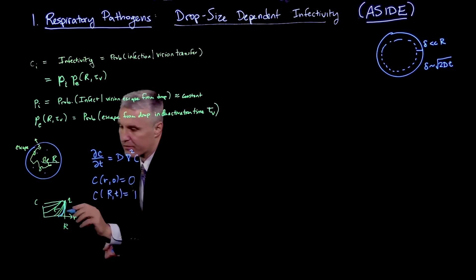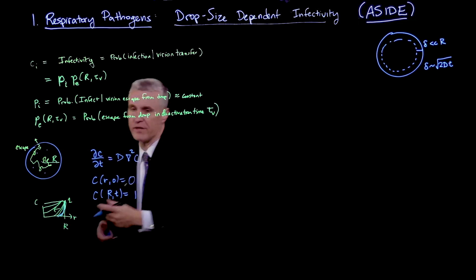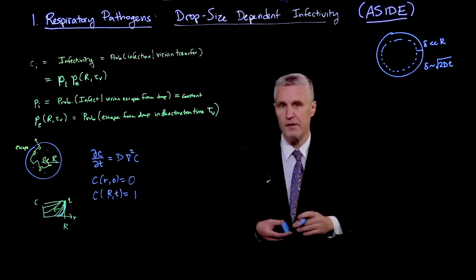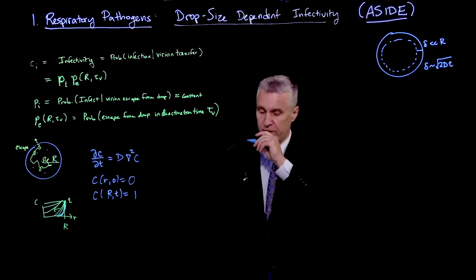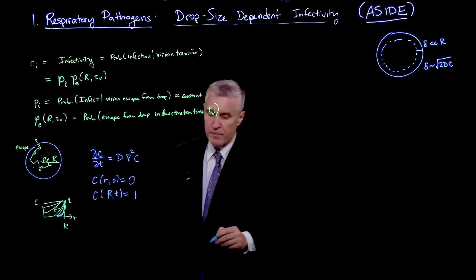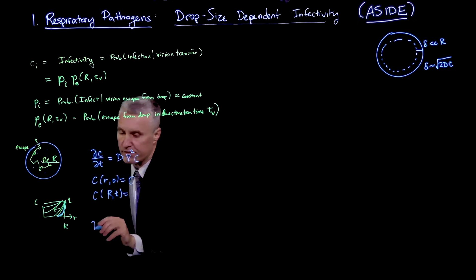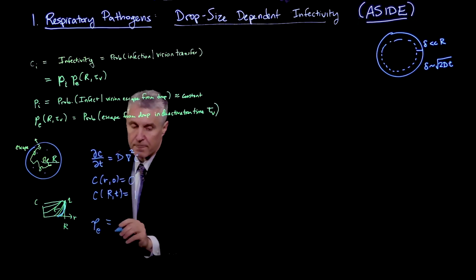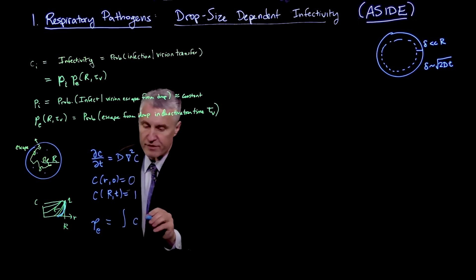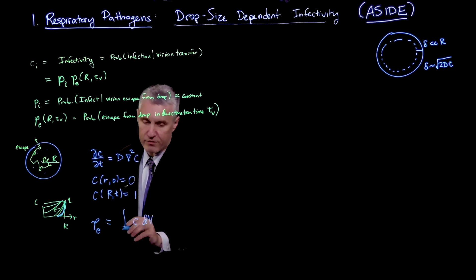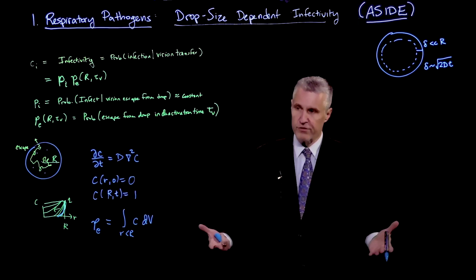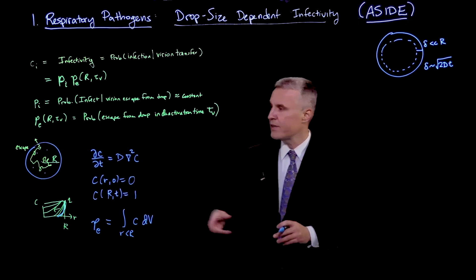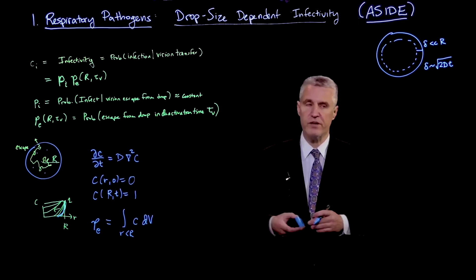Now let's ask ourselves, what is this concentration? What I'm really interested in is this escape probability Pe. That's going to be the integral of C dV over the volume. So this is the integral over all the r's that are less than capital R, inside the drop, of this concentration field. That concentration field starts at 0 and eventually goes to 1, and that's giving me this total escape probability.